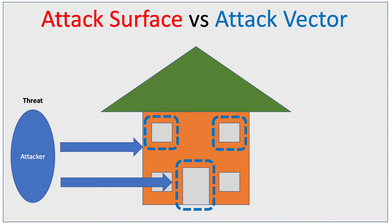So, if we map this to, say, for example, software — you know, there may be a flaw, there may be a vulnerability inside there, by means that it could be considered an attack vector for which an attacker can access.